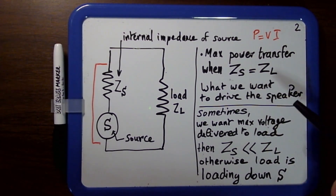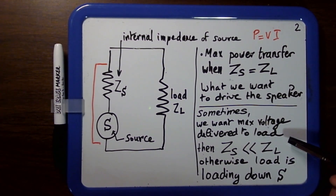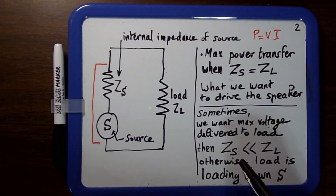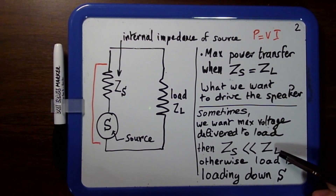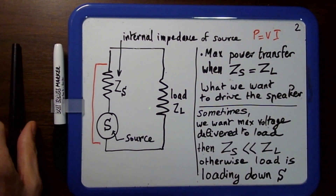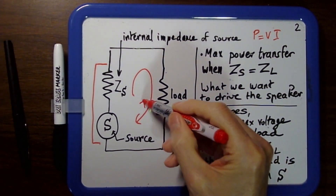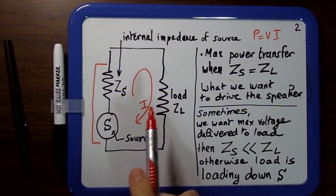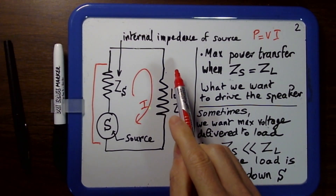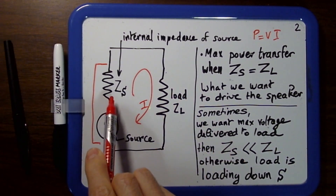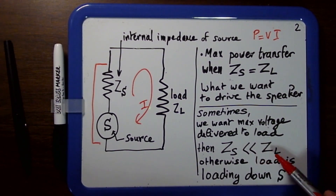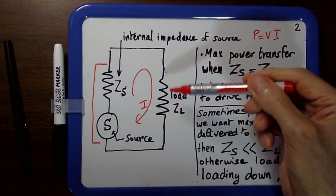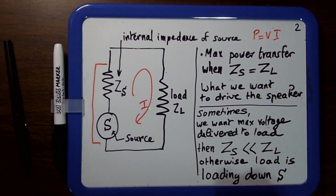Sometimes you don't want maximum power transfer — you want maximum voltage transfer, so you want the maximum voltage possible delivered to the load. In this case you want the internal impedance of the source to be much less than the impedance of the load. Looking at the circuit, there's a voltage drop across Zs and a voltage drop across the load. If Zs is much less than Zl, much of the voltage will be dropped across the load, which is what you want.